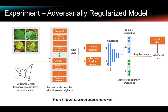What is the intuition? By adding this regularization term, the neural network learns to keep the similarity between the sample and its adversarial neighbor. In other words, the neural net learns to maintain the local structure of a sample and its adversarial neighbor. By leveraging these structured signals, neural nets can learn with less labeled data and also become more robust.